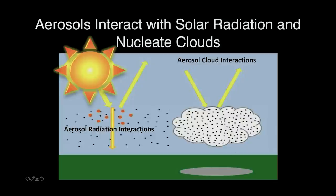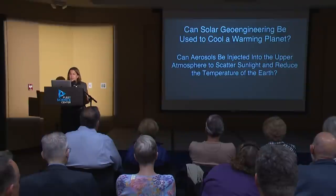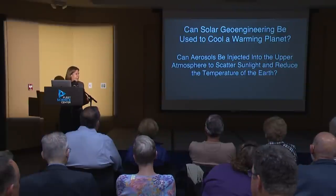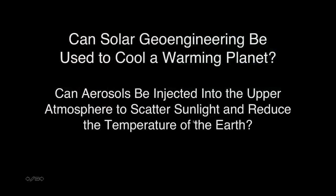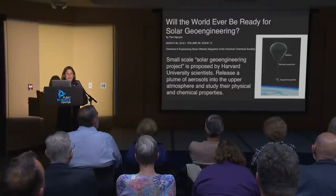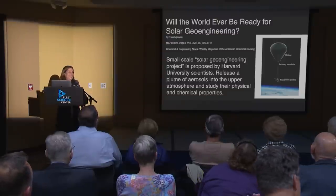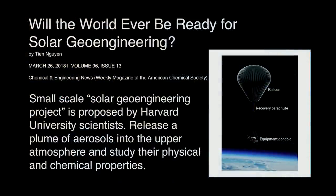Some people think the temperature of the earth would be much higher if we didn't have atmospheric aerosols. This brings up solar geoengineering: can it be used to cool a warming planet? We're over 400 ppm of CO₂ in the atmosphere and making little progress reducing it. Can aerosols be ejected into the upper atmosphere to scatter sunlight back into space and reduce the temperature of the earth? That's a question people are seriously asking.